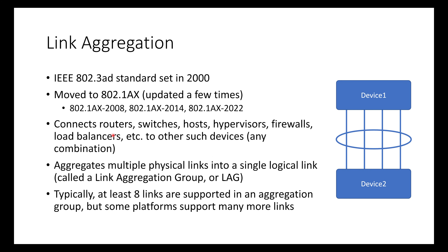So what is link aggregation? It's an IEEE standard, 802.3AD, set in the year 2000. It has since been moved to 802.1AX and updated a few times — versions from 2008, 2014, and 2022. Most of what we're talking about is based off of 802.3AD. There are a couple of new things in these updates, but everything we do day-to-day was in 802.3AD and has been carried forward.